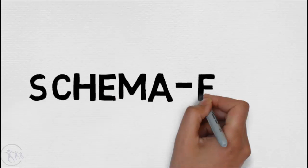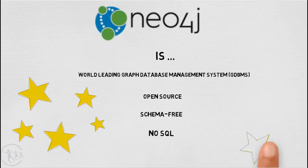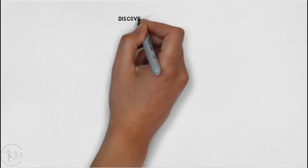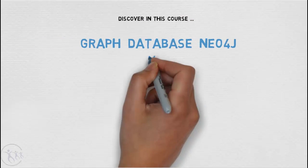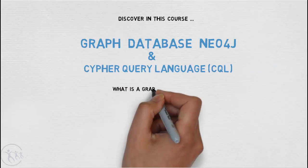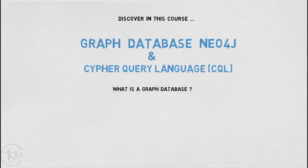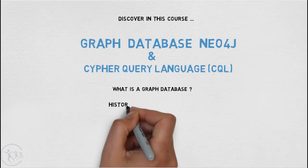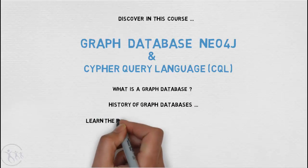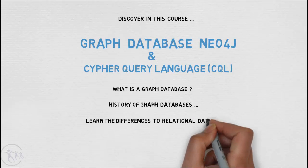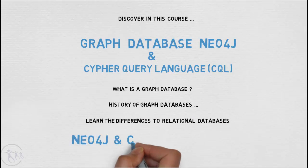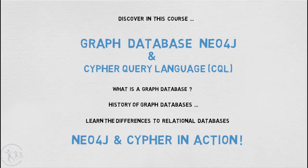Neo4j is open source, schema free and no SQL. You will discover in this course about Neo4j, the Cypher query language or CQL. You are also going to learn about what is a graph database and why are people using them, what's the history behind graph databases, what are the differences between relational and graph databases, and above all you will gain a practical foundation for building applications using Neo4j and the Cypher query language.